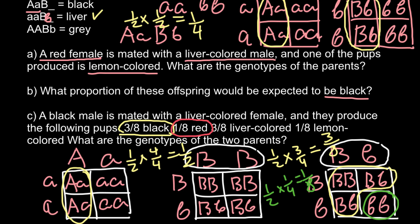It's now clear that we can exclude the homozygous dominant genotype, and black must be heterozygous for gene B. This is all for today. Thank you for your attention. Please subscribe for my new videos, which I post almost every day. Thumbs up if you like this video, and please write your comments and questions if you have any. See you in the next video. Goodbye.